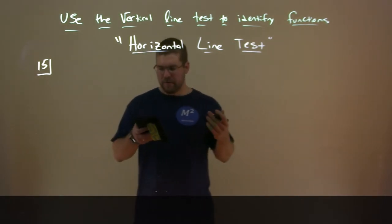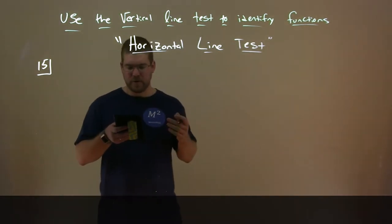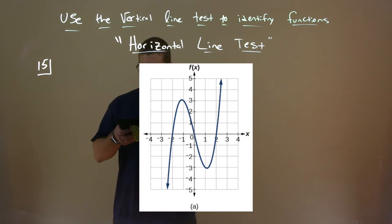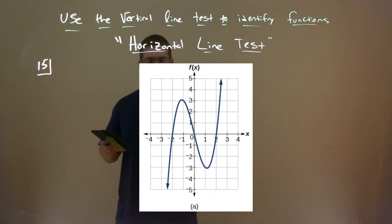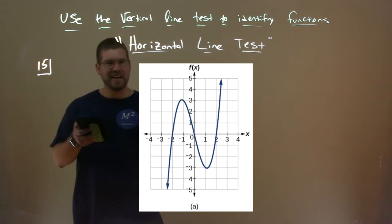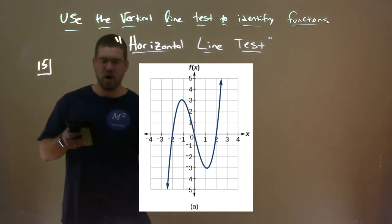So let's look at our first graph here. Our first graph here from before, is that function one-to-one? Does it pass the horizontal line test? And no it doesn't.